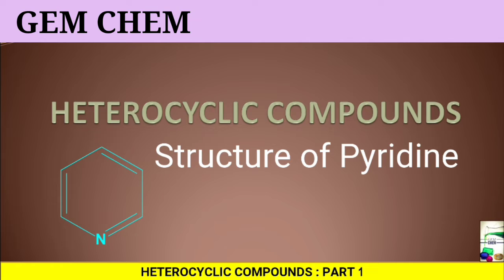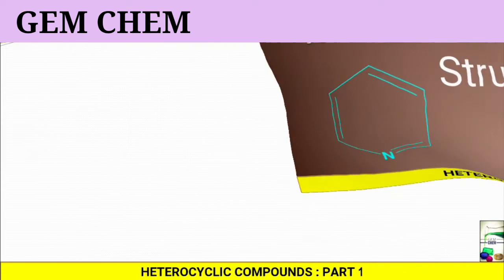Today's topic of discussion is structure of pyridine. What is pyridine? Pyridine is actually benzene with one CH being replaced by nitrogen.